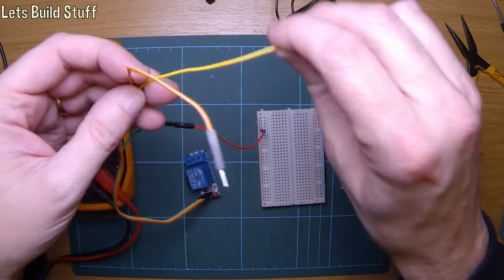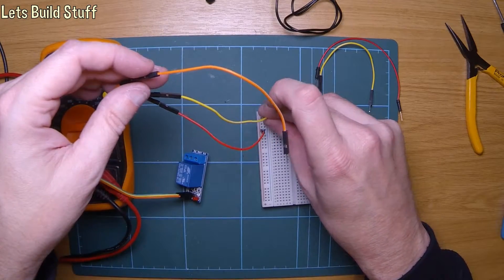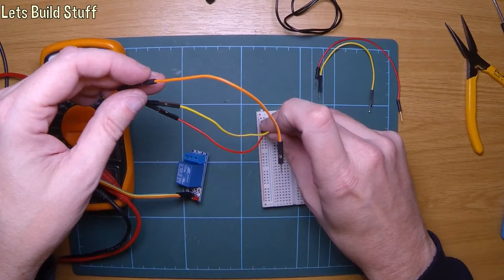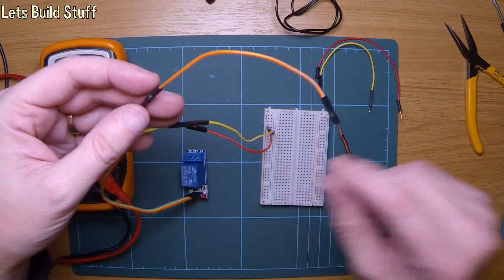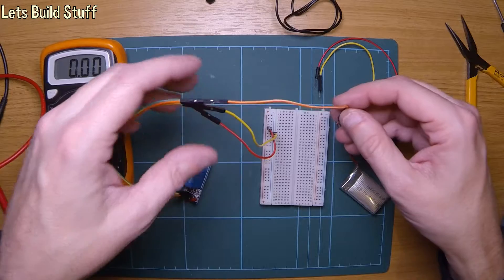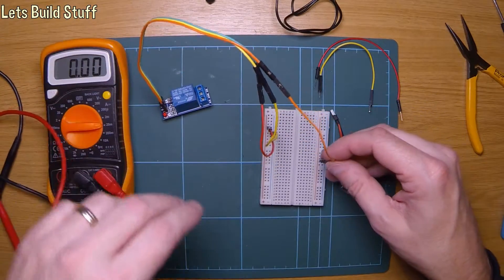It's a cheap one. Then you've got the yellow one. That's the ground, and this one is the in pin. So this will come live. When this comes live the relay will switch on.